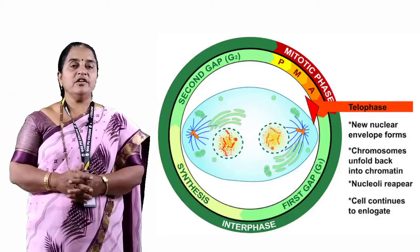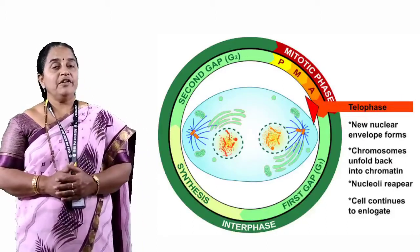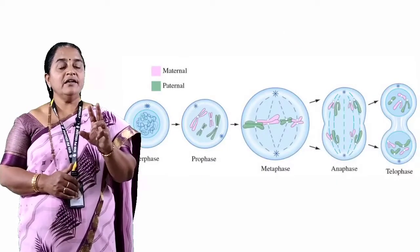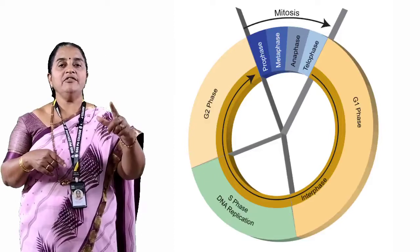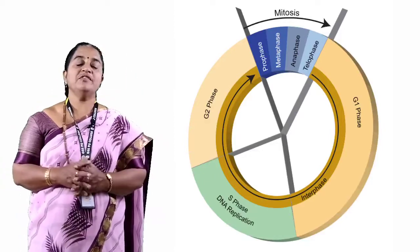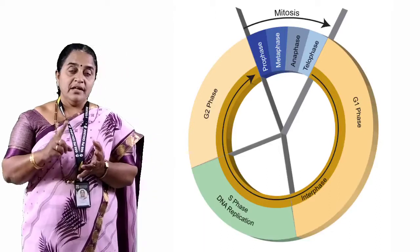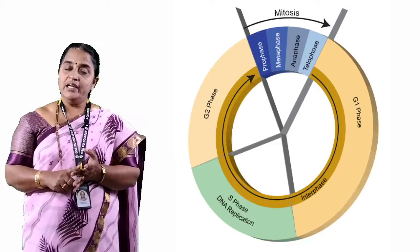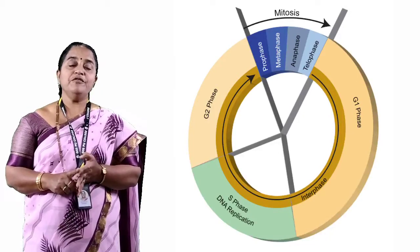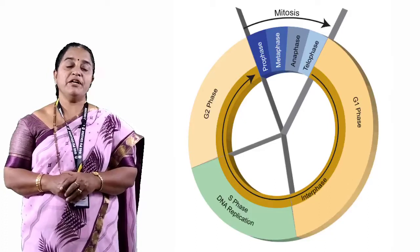Thus, at the end of telophase, two daughter cells are formed which may enter G1, continue to G2, and again divide to increase the number of cells — contributing to the growth of the organism. The four significances of mitosis are: growth of the organism, replacement of worn-out cells, wound healing, and maintenance of the nucleo-cytoplasmic ratio.